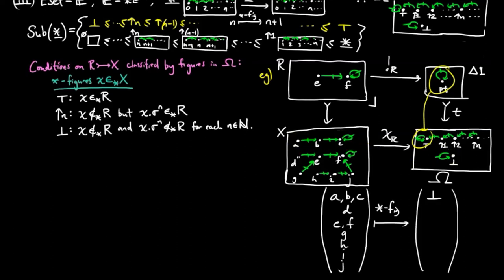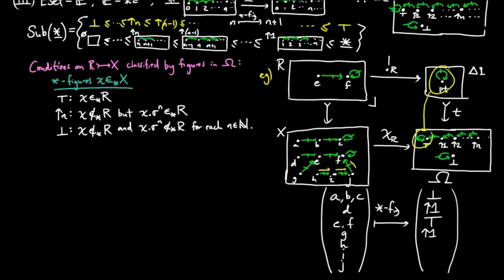D is one σ-step away from R, and thus is mapped to ↑1. E and f are in R, and so are taken to true. G is one σ-step away, and is thus mapped to ↑1. H, however, is three σ-steps away from being in R, and so is taken to ↑3. I is then taken to ↑2, and j to ↑1.